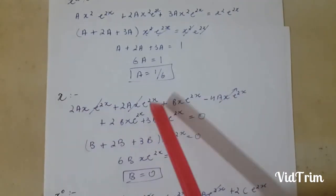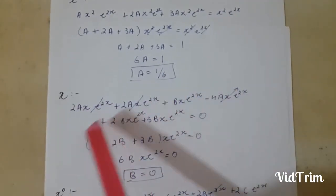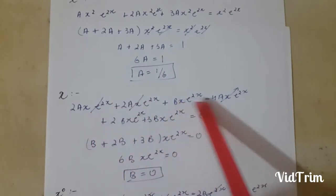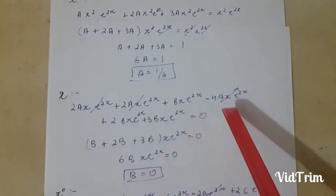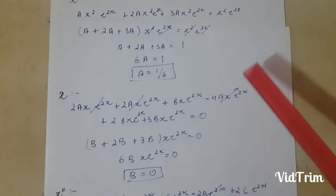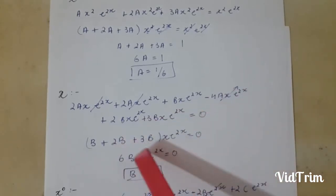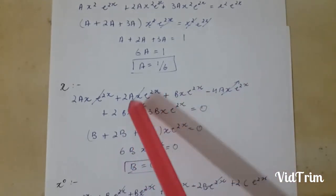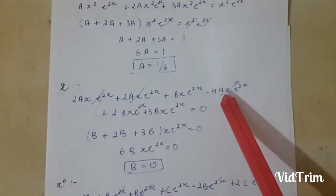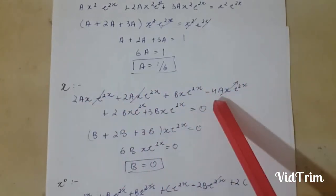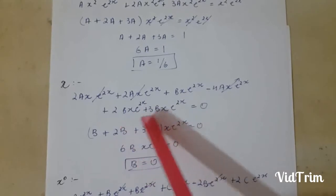Now on comparing x, I have too many terms which equals 0 because on the right hand side there is no x. So I simply cancel out and I am taking x e^x common here